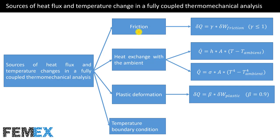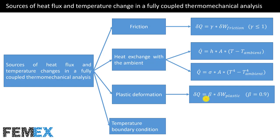If there is friction in the model, the generated heat due to friction is calculated from the friction heat equation — the increment of generated heat is equal to the product of gamma and the increment of friction work, where gamma is always less than 1. There are two ways of heat exchange with the ambient: convection and radiation. If there is plastic deformation in the model, the increment of generated heat equals the product of beta and the increment of plastic work, and in most materials beta is equal to 0.9.